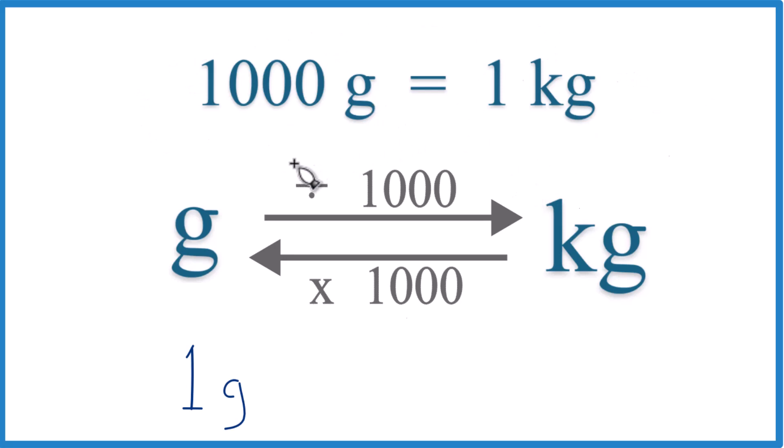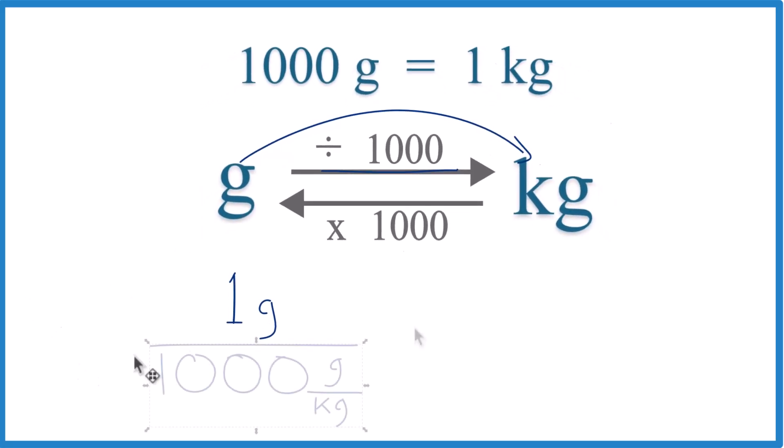So if we have grams and we're going to kilograms, we're going to divide by 1,000, like this. And note that that's 1,000 grams per kilogram. 1,000 grams equals 1 kilogram. This way we have grams on the top, the bottom they cancel out, we're left with kilograms.